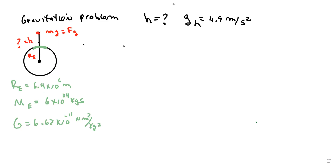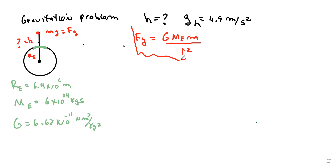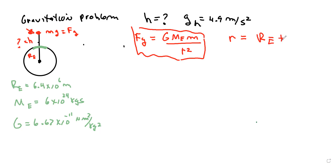Let's do our equations. We know that the force of gravity is going to be the gravitational constant times the mass of the Earth times the mass of the particle over r squared. And we know that r, the distance, is going to be the radius of the Earth plus h.